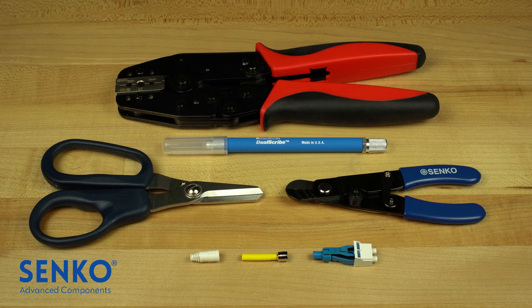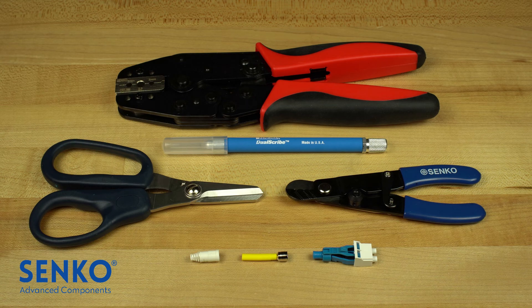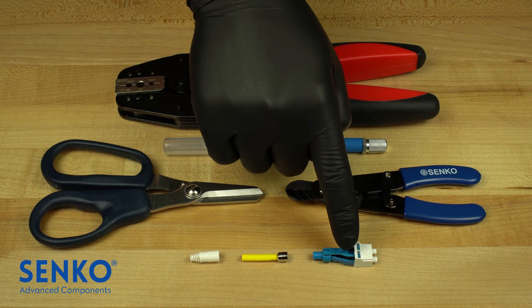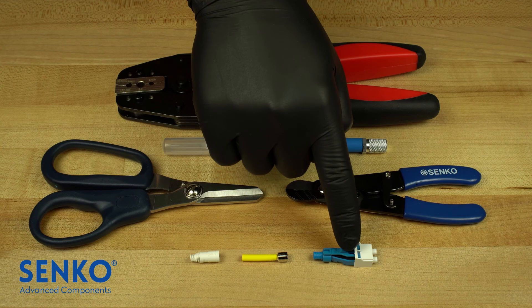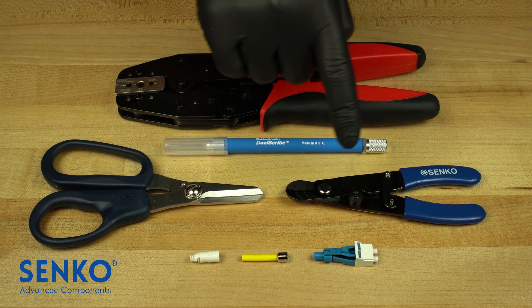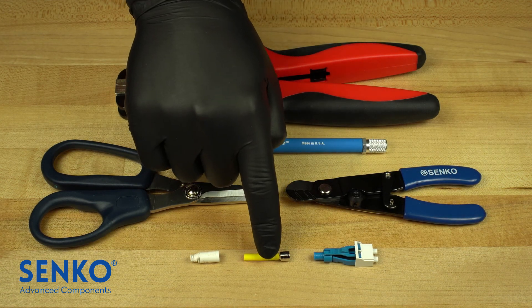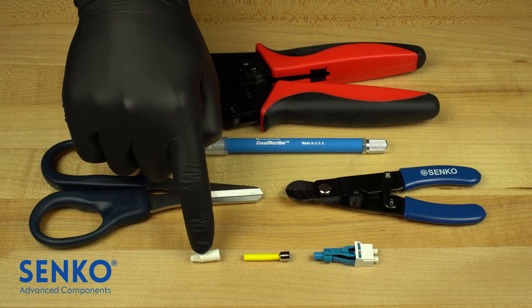First, you must identify all of the components in the kit. This includes the EasyFlip LC pre-assembled front body with a dust cap installed, the crimp ring with heat shrink tubing for use on 2mm cable, and a boot.